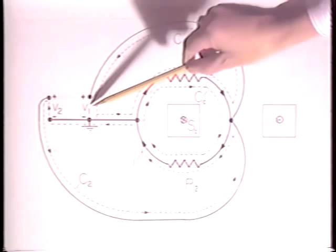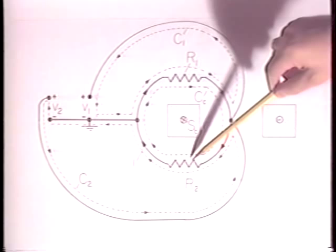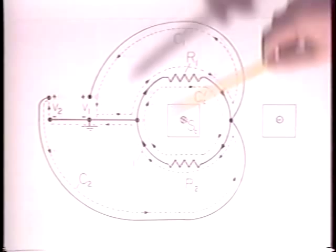So the current carried by the oscilloscope leads is negligible. This means that if there is a current I through one of the series resistors, it must be the same as that through the other.